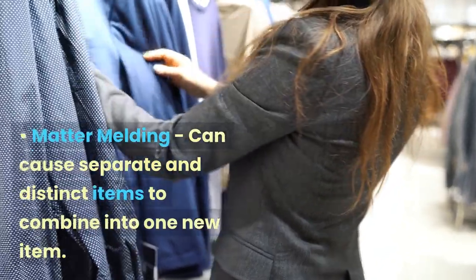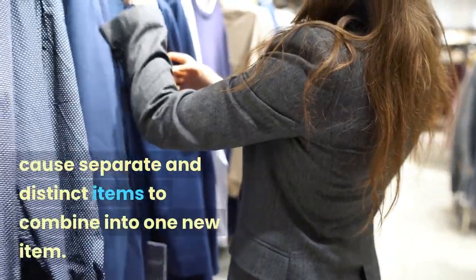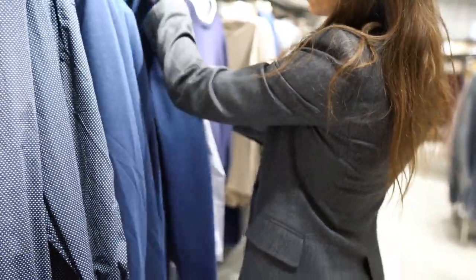Matter melding can cause separate and distinct items to combine into one new item. Matter redistribution is able to redistribute or shift matter around.